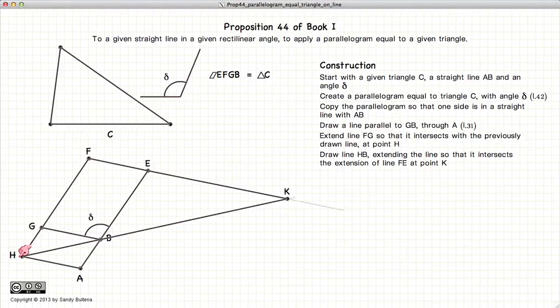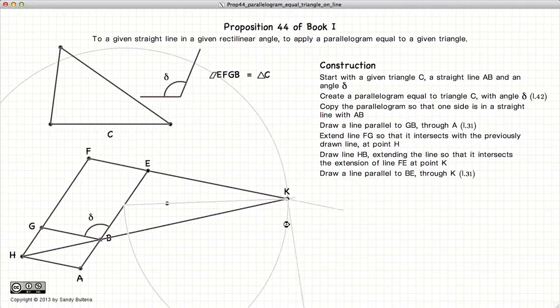Now we're drawing a diagonal through the parallelogram GHAB and extend it all the way out so it crosses the extension of the line FE. And now we will complete our diagram by extending HAB